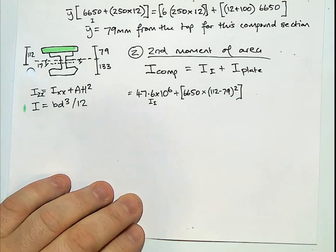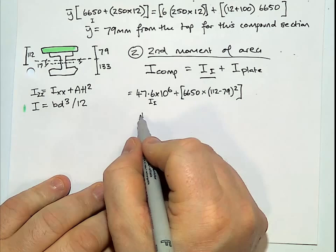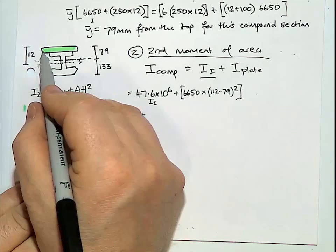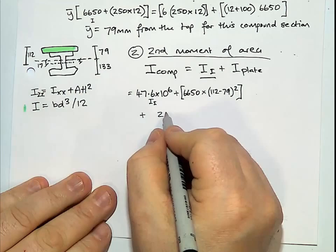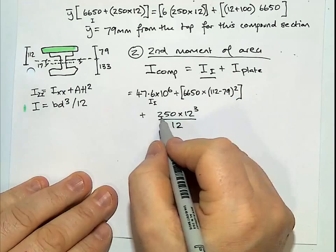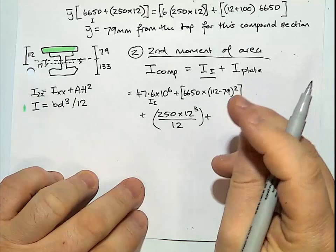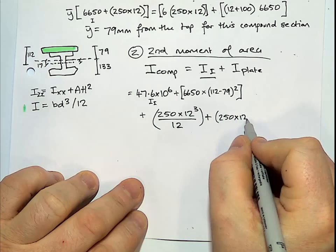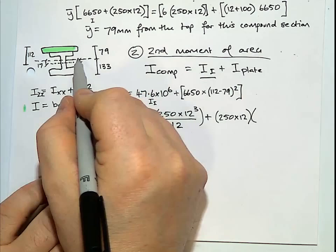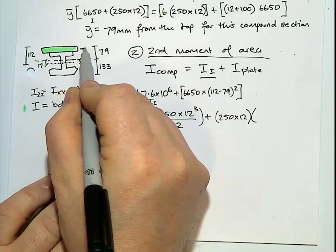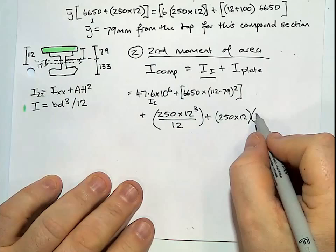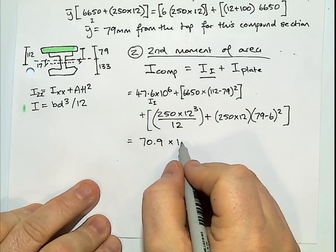So that's just for the I section. Then we add the plate. For the plate, again using the parallel axis theorem, we've got Bd cubed over 12. So our B is 250 times by D cubed over 12. Plus the area times by H squared. Area is 250 times by 12. And then the distance from the centre of gravity for the compound to the midpoint of the plate. It's 79 take away 6. So that's our Ixx for the compound section.